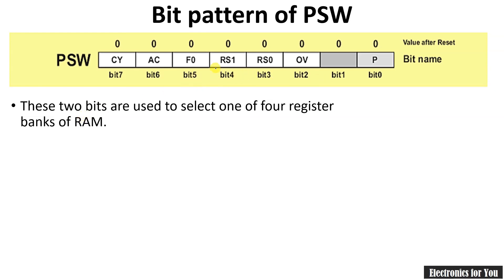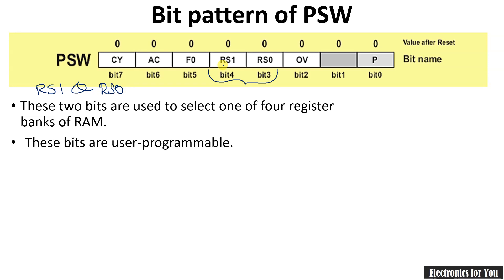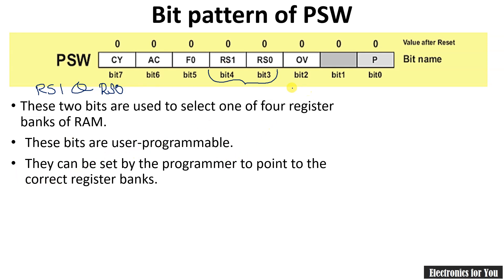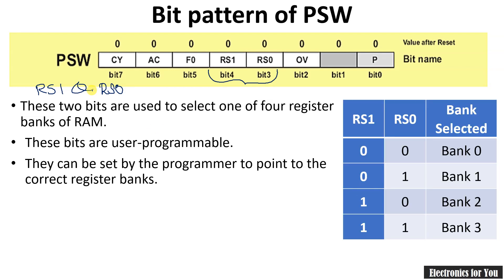The next bits in the PSW are RS1 and RS0 — bit 4 and bit 3 respectively. RS stands for Register Select. These bits are used to select the register bank. Unlike the other flags, RS1 and RS0 are not results of arithmetic operations — they are user-programmable bits. The user can set or reset them to select the desired register bank by placing the appropriate values in the instruction.